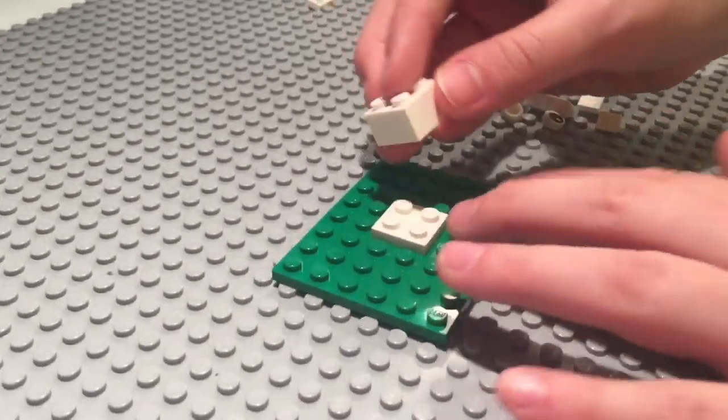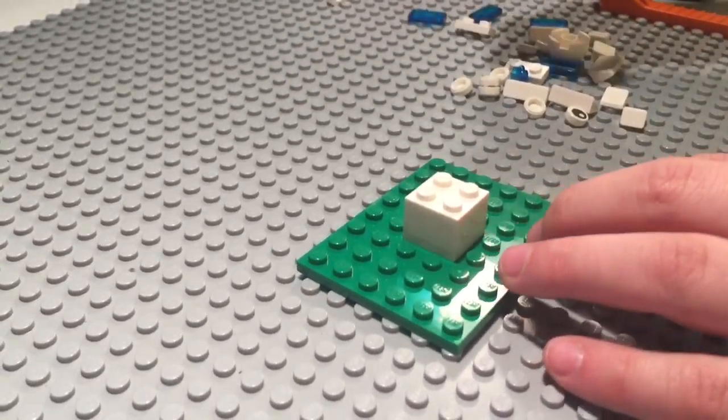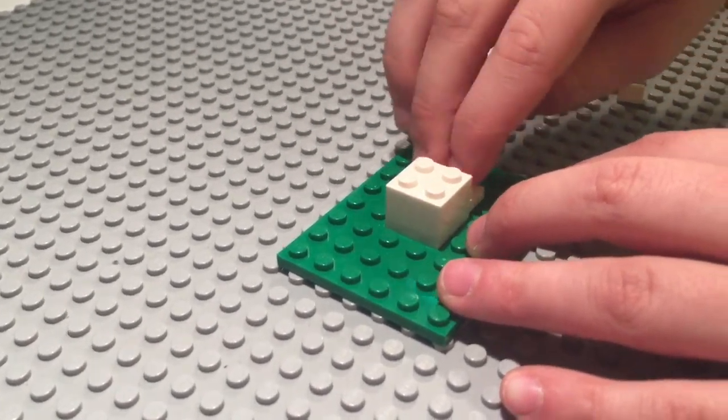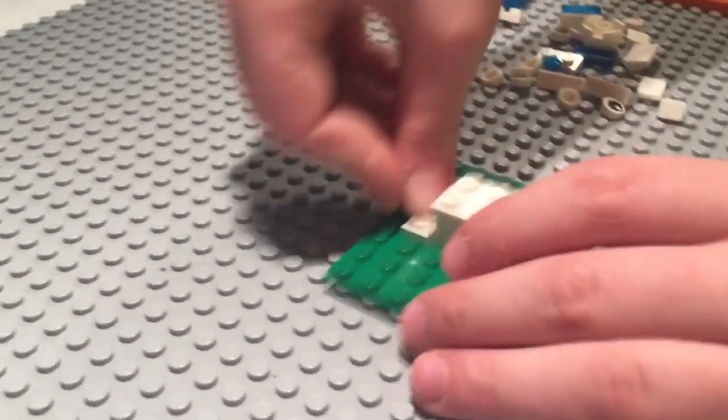Flat, and then a 2 by 2 brick goes on top, and then here a 1 by 2 flat, and then same all around.